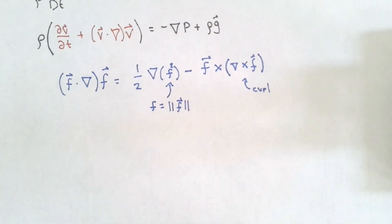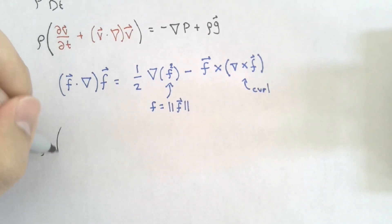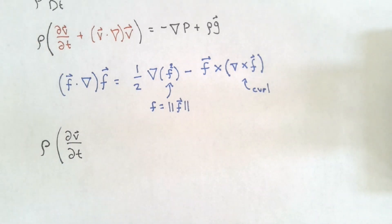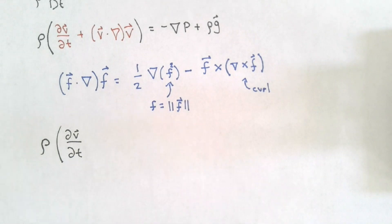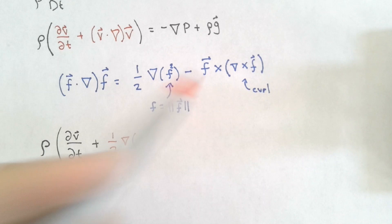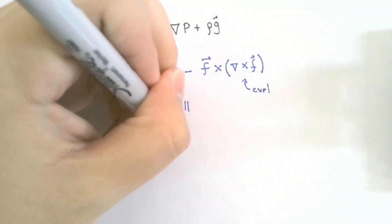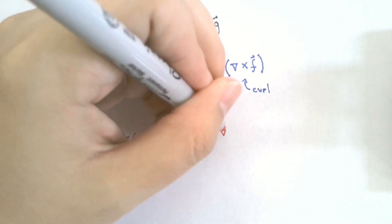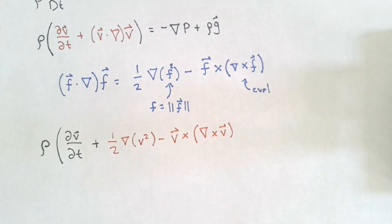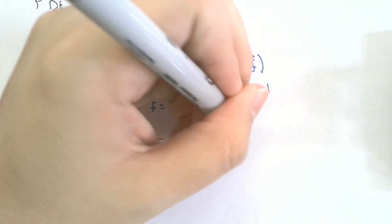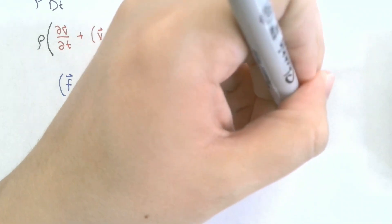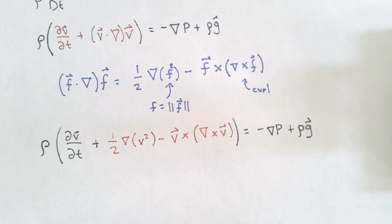What does our Euler equation look like when we apply this operator? We will have the density term, the local change, and now applying the vector identity: one-half del of the magnitude of the velocity squared, minus the cross product of the velocity vector and the curl. All this equals the negative gradient of the pressure field plus the gravitational force. The equation is starting to take shape.